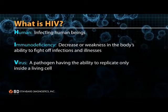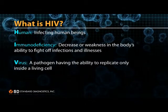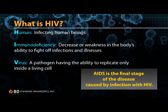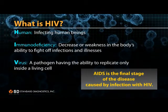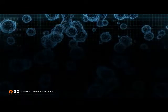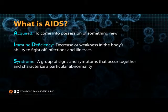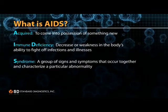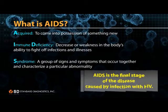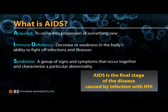HIV stands for Human Immunodeficiency Virus. It infects humans and weakens the immune system, which is an important system in the body for fighting off infections and illnesses. It is the virus that causes AIDS. AIDS results when HIV infection progresses to an advanced stage, damaging the immune system to a point at which the body can no longer fight illness. AIDS is the final stage of the disease caused by infection with HIV.